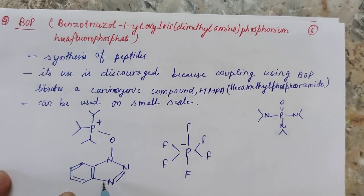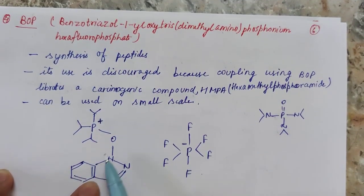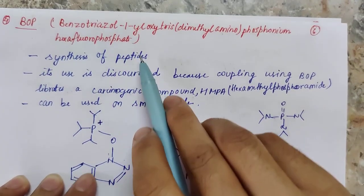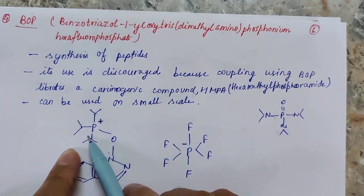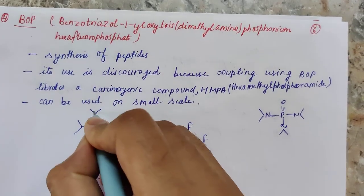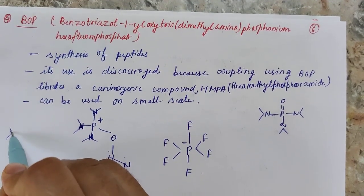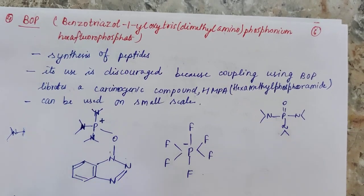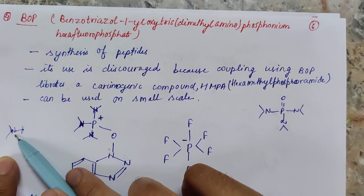In BOP's structure, the benzotriazole is numbered 1, 2, 3 at the nitrogens. The 'oxy' refers to the oxygen on position 1, 'tris' indicates three dimethylamino groups, and 'phosphonium' refers to the phosphorus center. Each dimethylamino group — NMe2 — is attached to phosphorus, and three such groups are present.